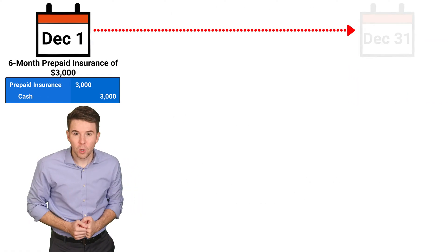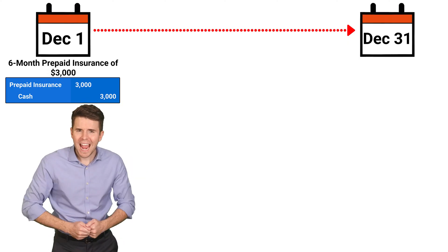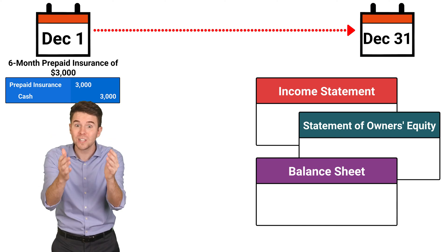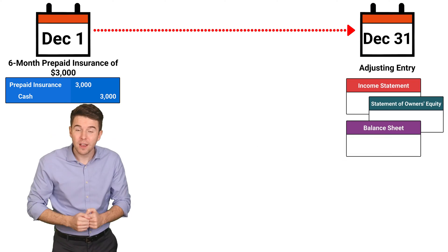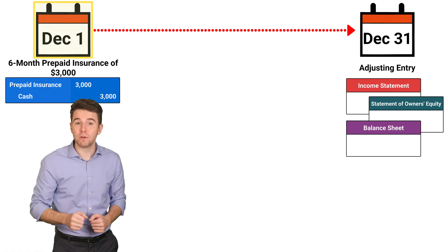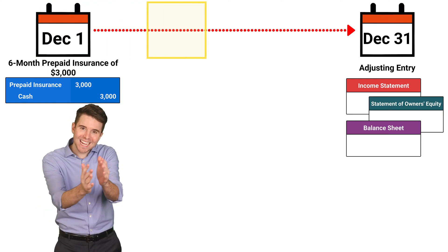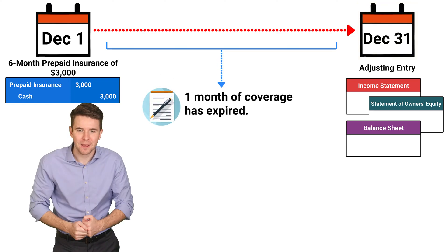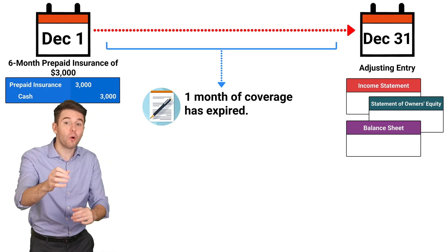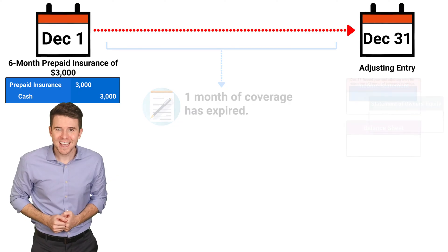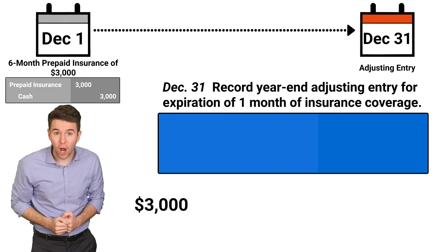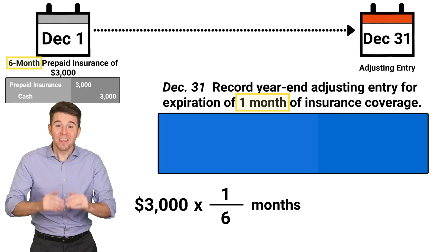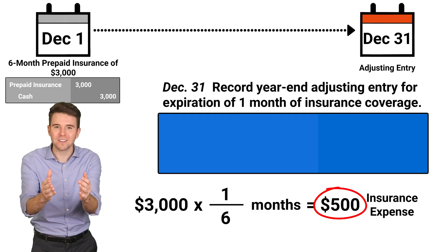Let's fast forward to December 31st, which is the end of the accounting period for the company. For the December 31st financial statements, to include all expenses incurred using accrual accounting, we need to record an adjusting entry for insurance expense. That is because between December 1st, when the insurance was purchased, and December 31st, when the financial statements are prepared, one month of the six-month insurance policy has expired. We need to record one month of insurance expense, so we take the $3,000 cost and multiply it by one over six months. This gives us insurance expense of $500 for the month.